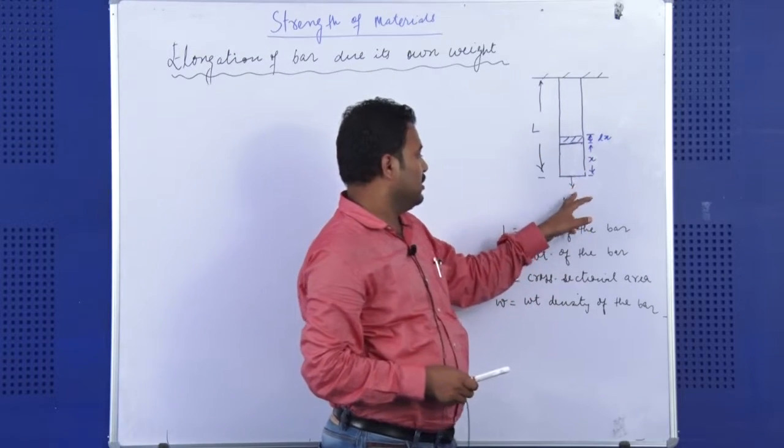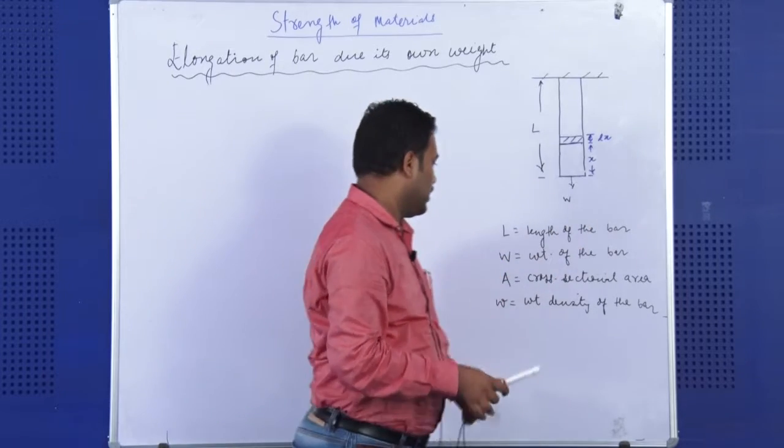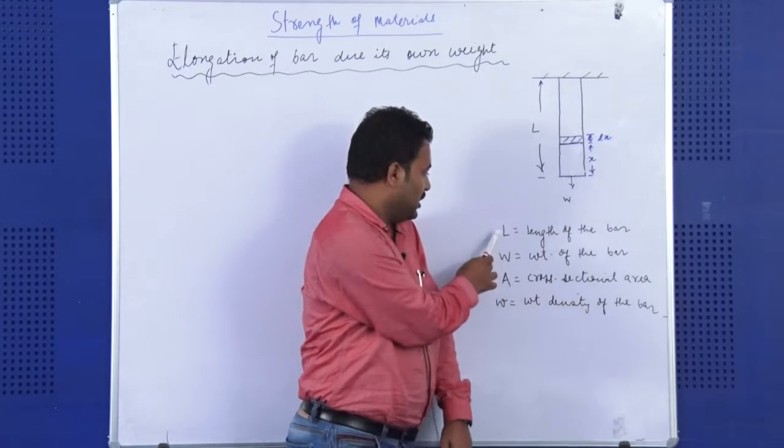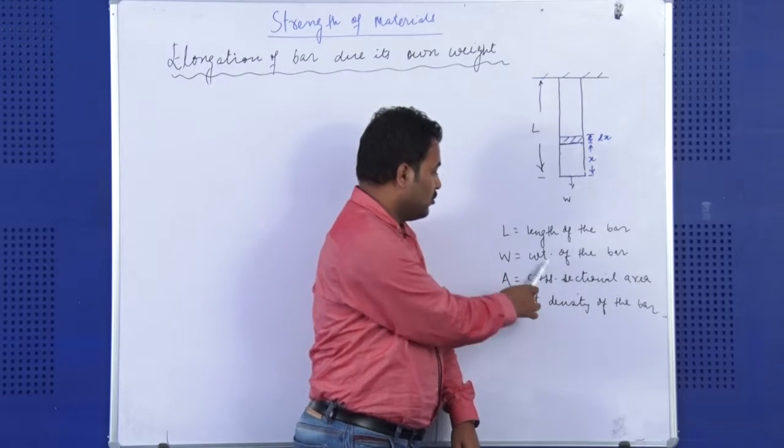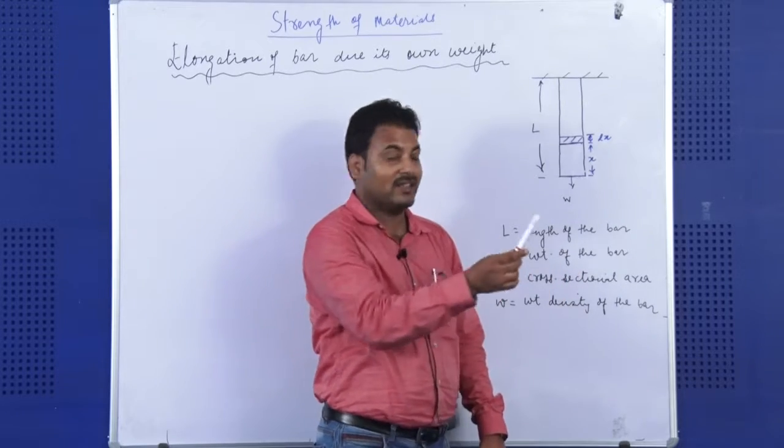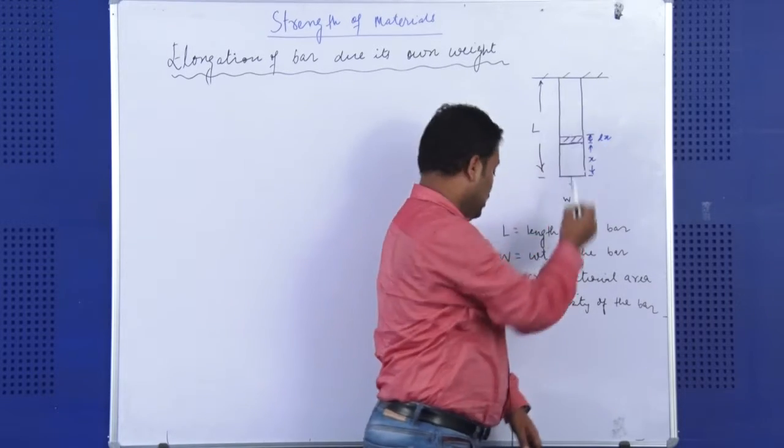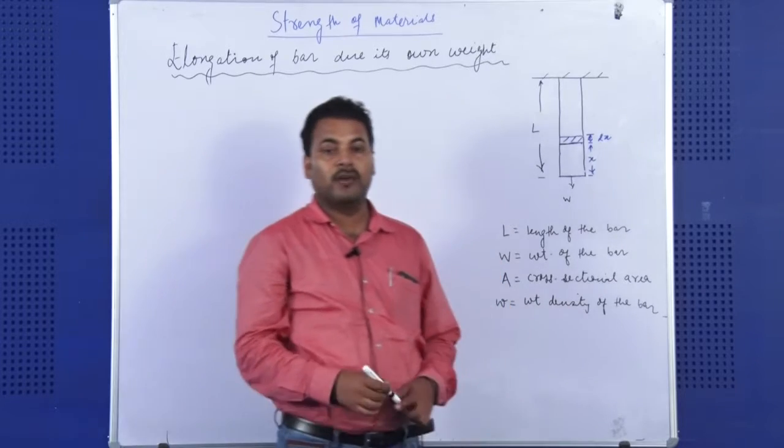And its weight is W acting at the bottom of the bar. As I have also mentioned here, L is the length of the bar, W is the total weight of the bar, A is the cross sectional area which is constant throughout the bar, and w is the weight density of the bar.